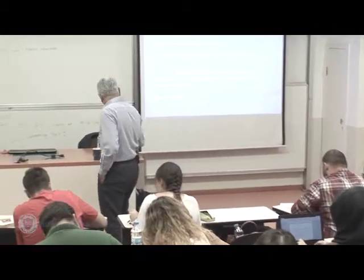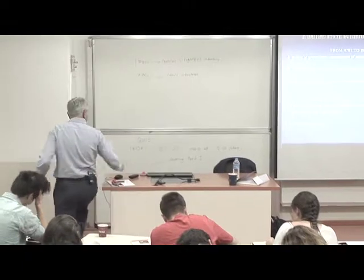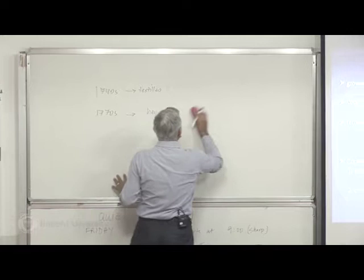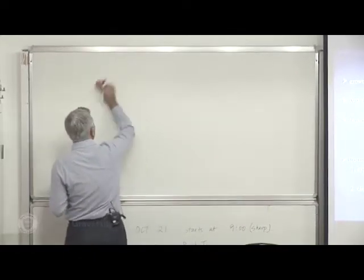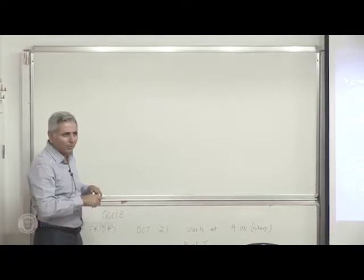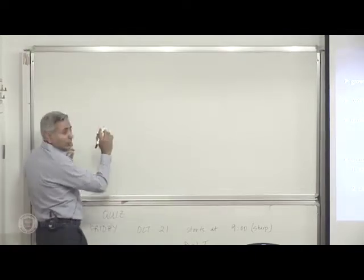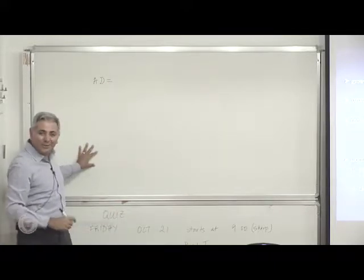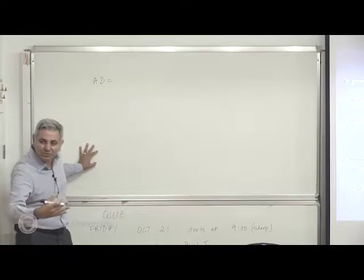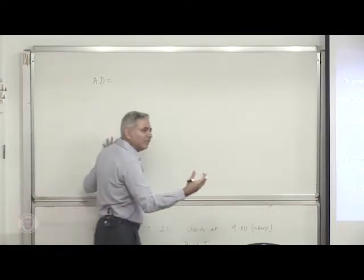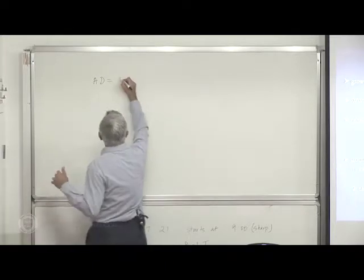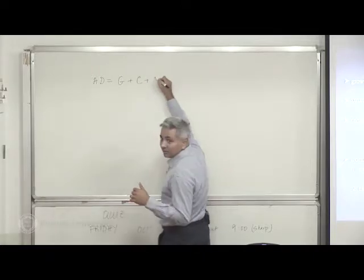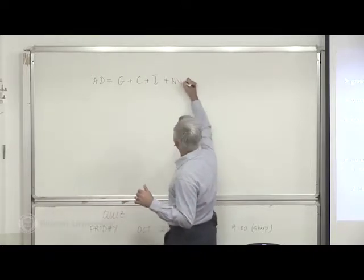So in times of war — just try to remember — aggregate demand is equal to all kinds of expenditures. Do we remember what kind? Government expenditures, consumption expenditures, investment expenditures, and net exports.